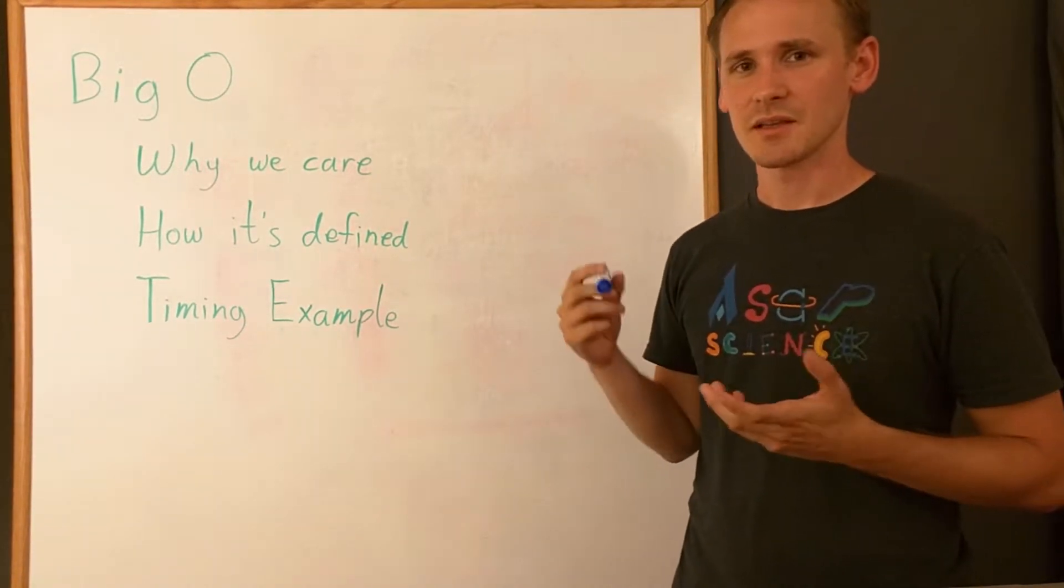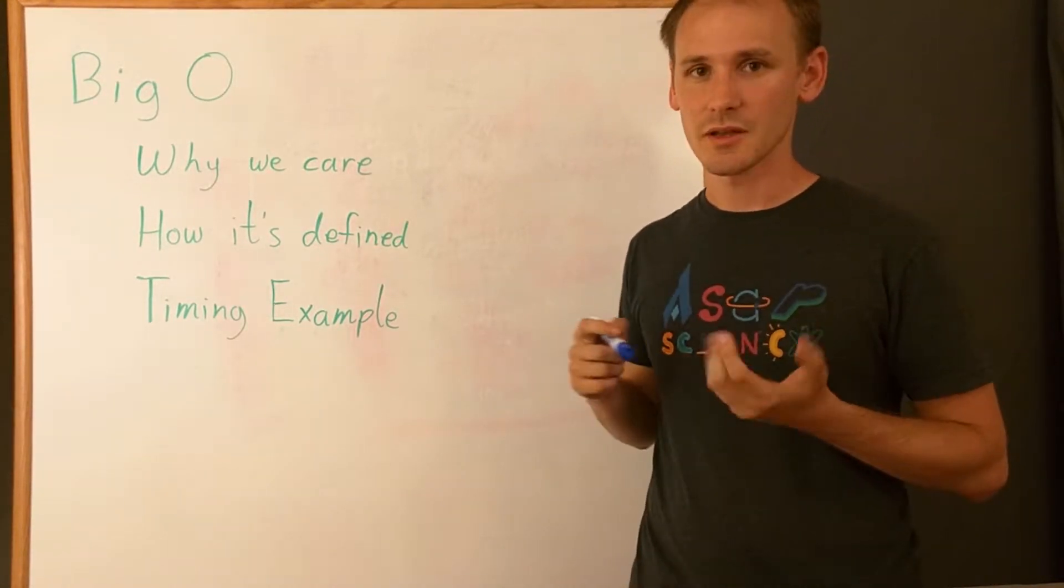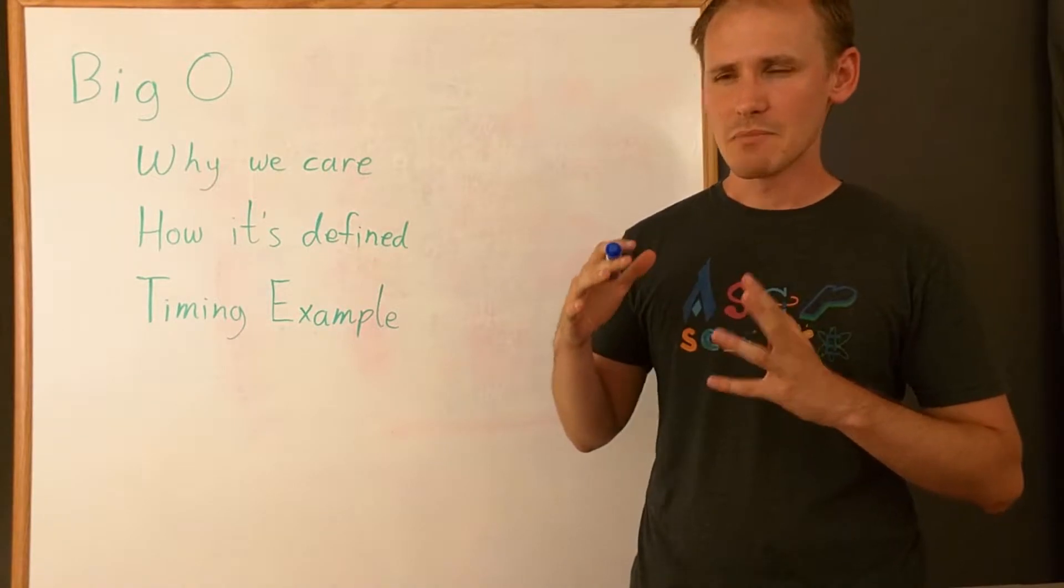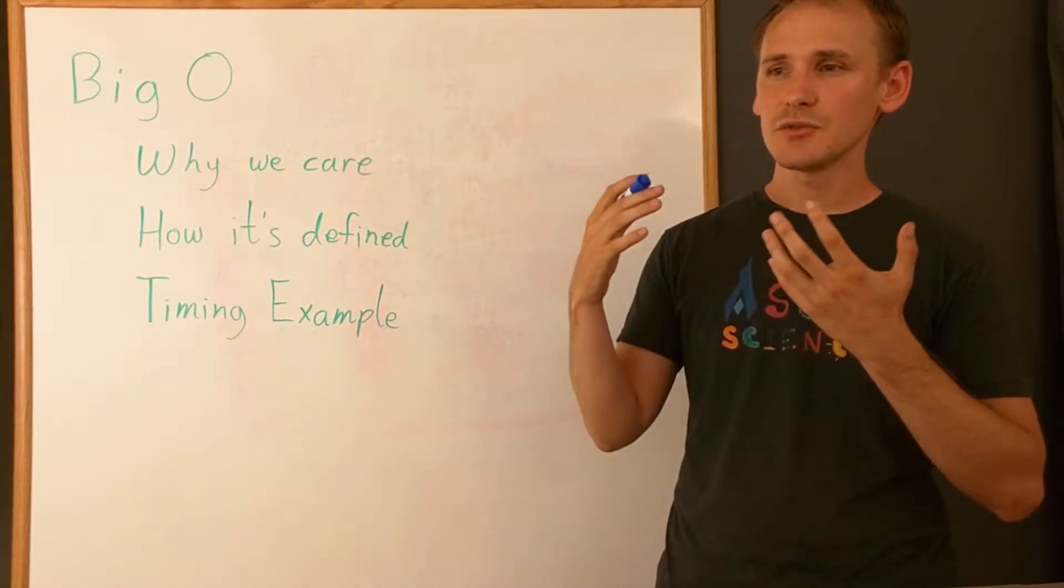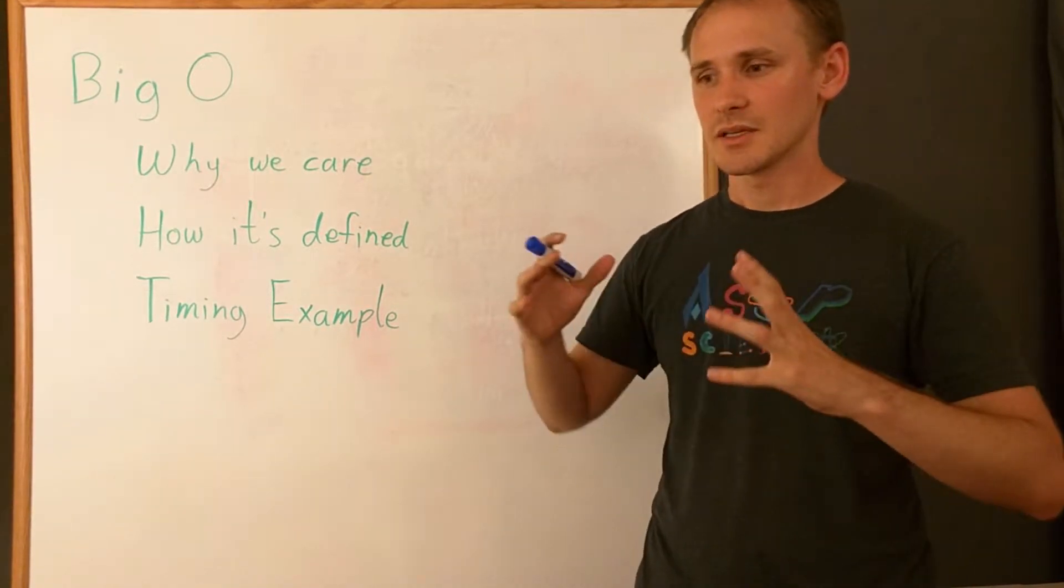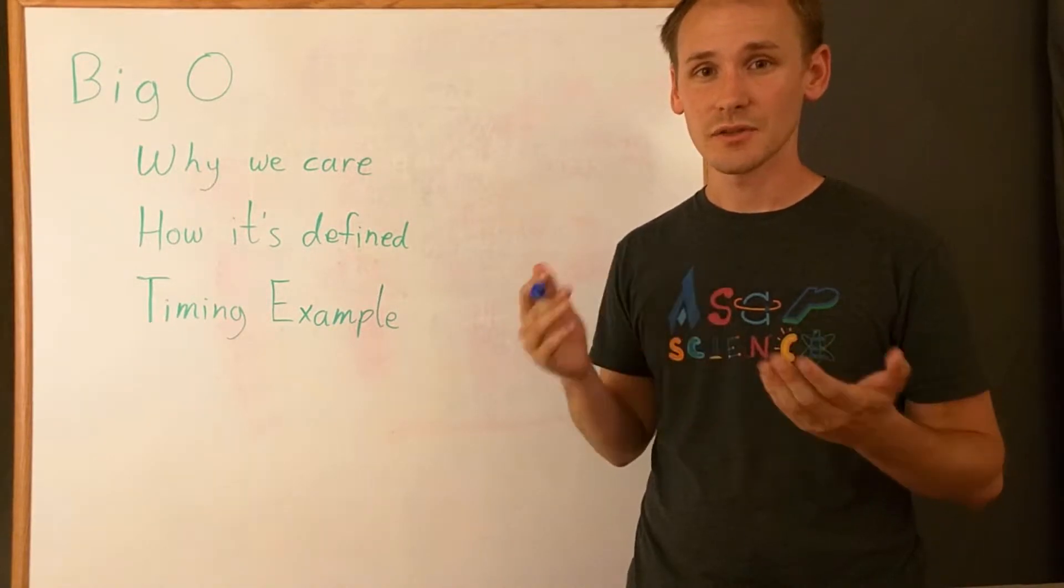The first thing to know is that big O is not just defined in terms of how fast a program takes to run. It's really a bound of sorts on any function. It gives you a sort of limit. Not a mathematical limit, but a sort of limit on how quickly a function can grow in the worst case.